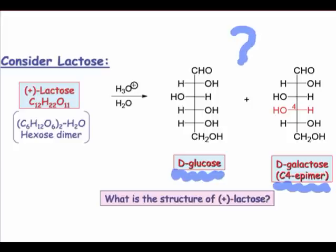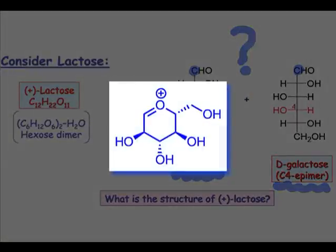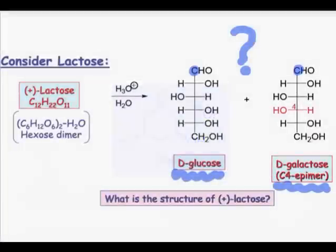However, we still don't know which two carbons are connected by glycosidic linkages. Because the acid worked to cleave the disaccharide, we do know that an anomeric position on one of the sugars must be involved in the glycosidic linkage. No other positions in the sugar can support stabilized cations under these acidic hydrolysis conditions like the anomeric position can. However, which sugar is linked through its anomeric position remains a mystery to us at this point.